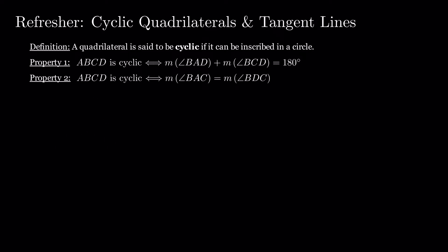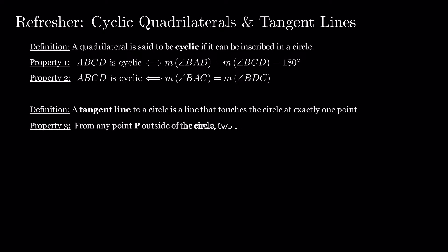Now, we move on to tangents. A tangent line to a circle is a line that touches the circle at exactly one point. From any point P outside of the circle, two tangent lines can be drawn. The tangent line to a circle is perpendicular to the radius to that point.